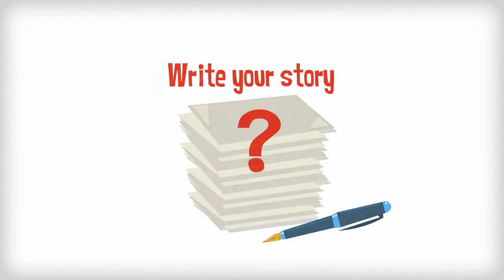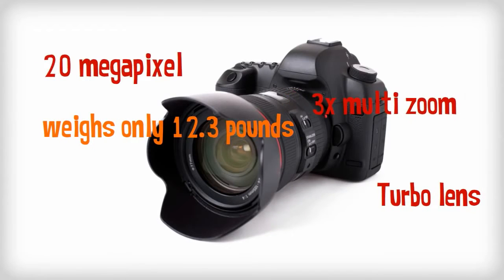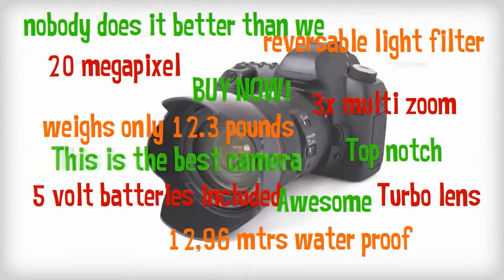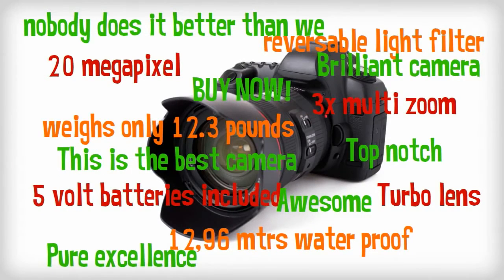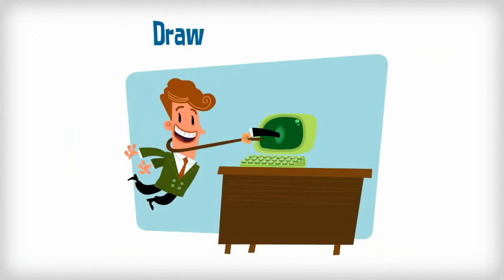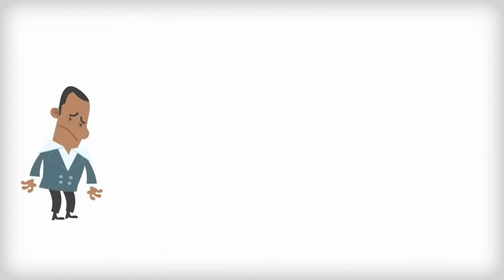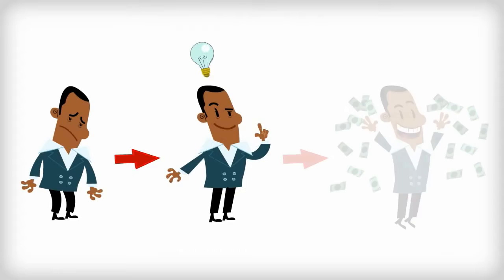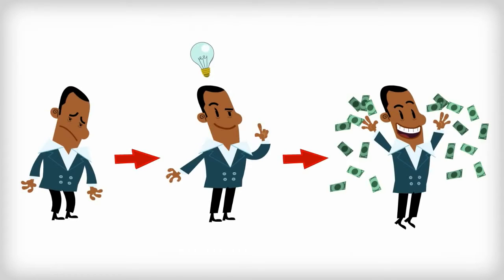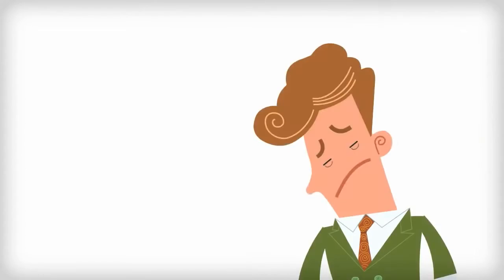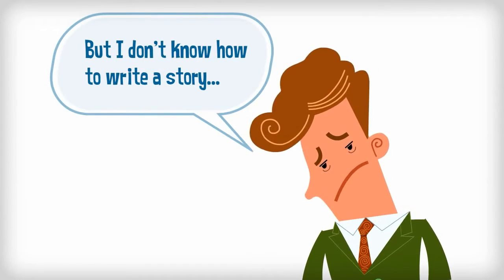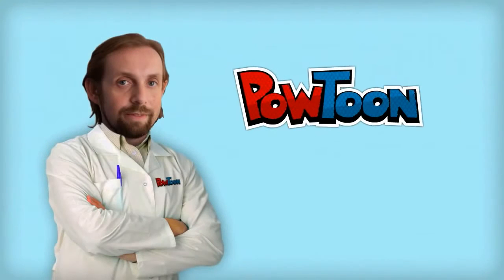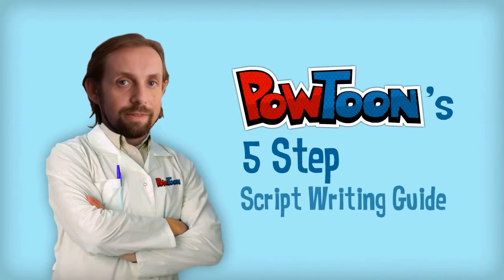Why start with a story? Because no one wants to be hit over the head with product features or your ravings about how great your product is, even if it is pretty awesome. They want to be drawn in by a story — one that relates to them and shows them how your product or service is relevant to their circumstances or how it can solve their problems. You might be saying, but I don't know how to write a story. No problem. Introducing Powtoon's five-step script writing guide.